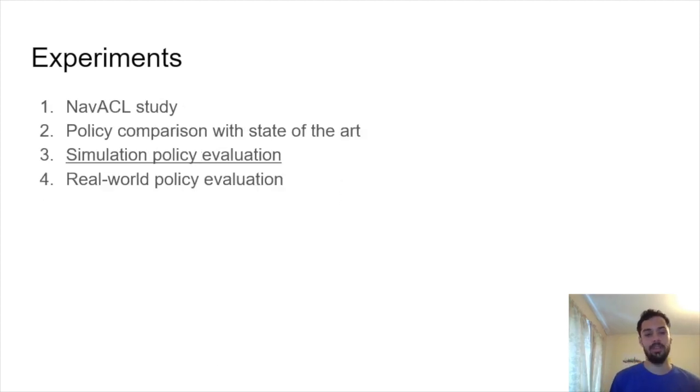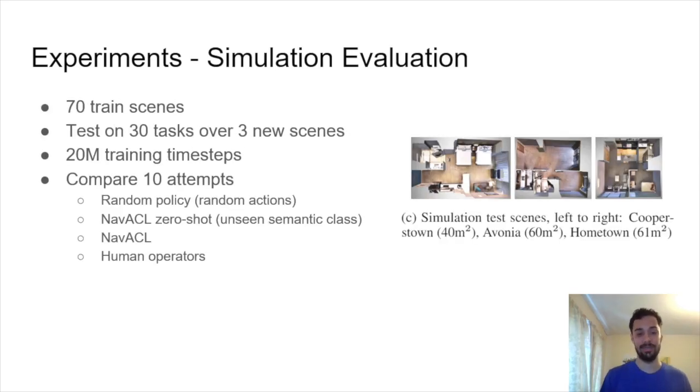We showed that our policy can beat state-of-the-art. Now let's evaluate our policy more thoroughly across multiple environments and see how it can generalize. We train on 70 distinct scenes and then we test on 30 tasks over three never-before-seen scenes. We train the policies for 20 million training time steps, and because these policies are stochastic, we compare 10 attempts of each of the following policies. We have a random policy where we simply sample random actions. We have NAVACL zero-shot where our agent has been trained on a football and during test time it is navigating to a vase. We have NAVACL where we've trained on a football and we're navigating to a football. And then we finally have 10 distinct human operators who played through the entire same training set and test set as our agents.